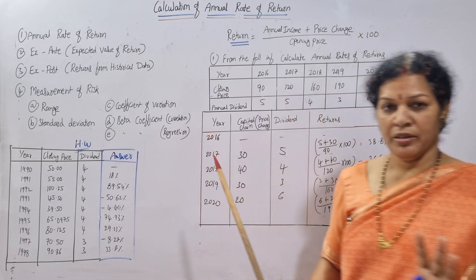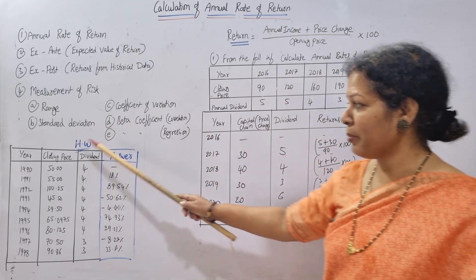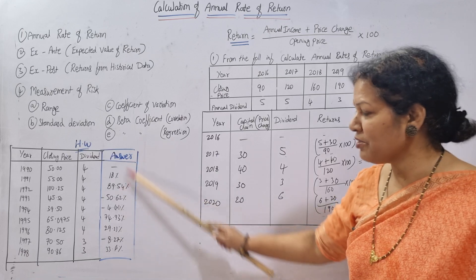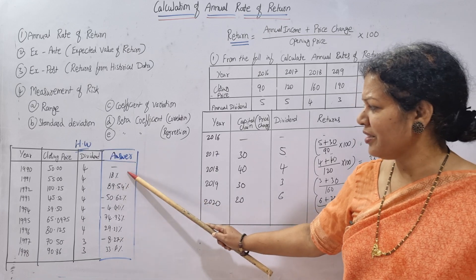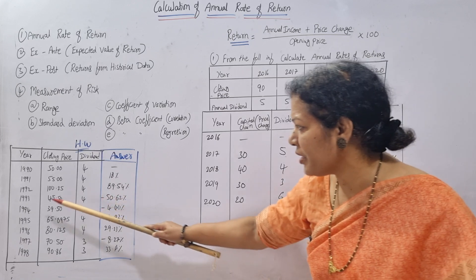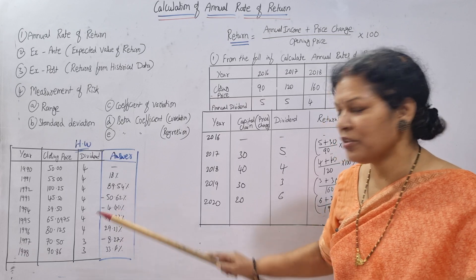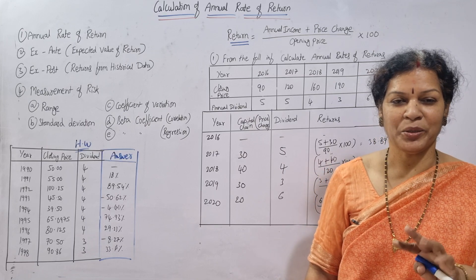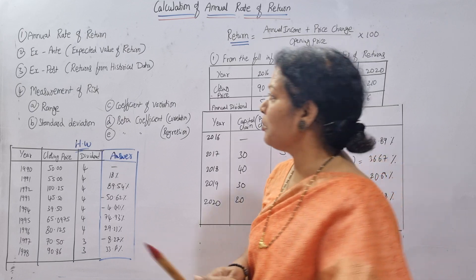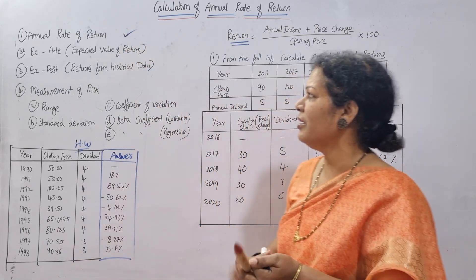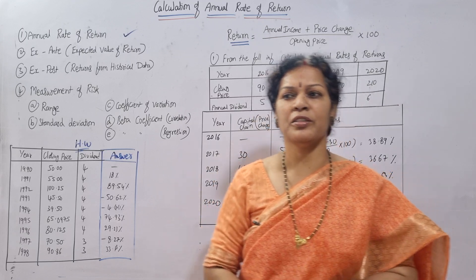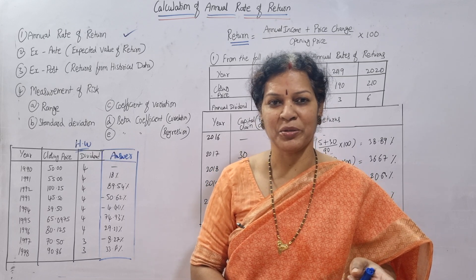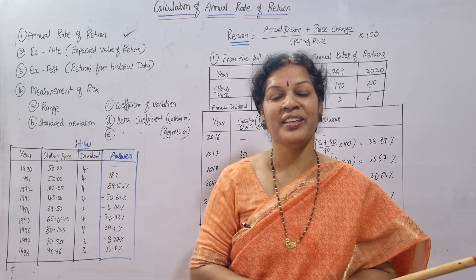For homework, a similar problem is given with years and closing prices and dividends — the answers include negative returns for some years like 1991, 1994, and 1997. Work it out and verify. This topic — annual rate of return — is now complete. The next class will focus on expected value of return, which is based on given factors and is also quite easy.